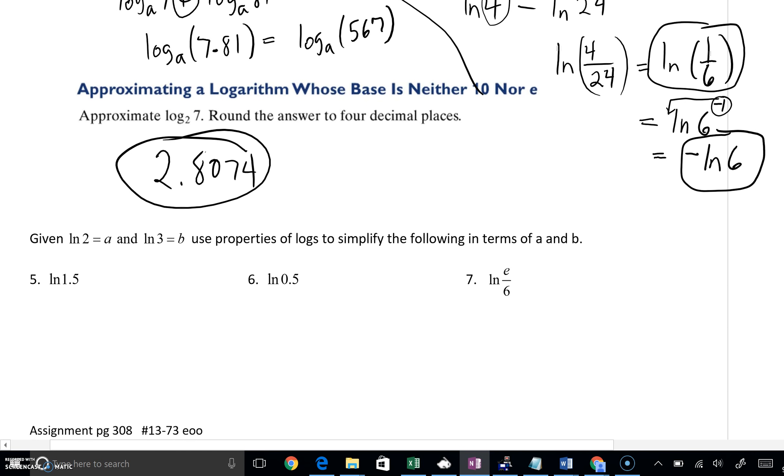Finally, in this last section, given that natural log of 2 is a and natural log of 3 is b, could we use properties of logs to simplify in terms of a and b, just having a and b in the answer. Well, natural log of 1.5, I hope you think of 1.5 as 3 over 2. And now I'm going to use my fraction, that division property. This is natural log of 3 minus natural log of 2. Natural log of 3 we saw is b. Natural log of 2 is a. Answer, b minus a.